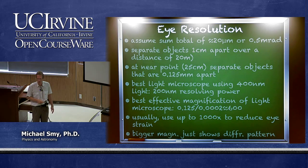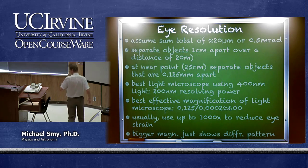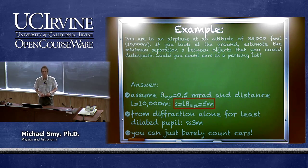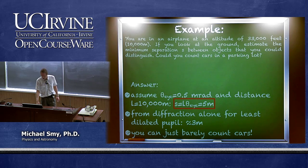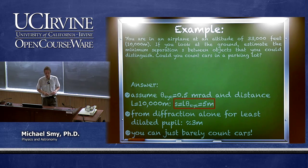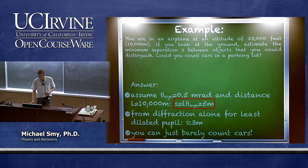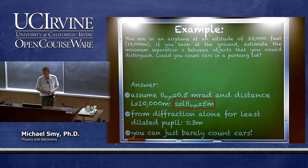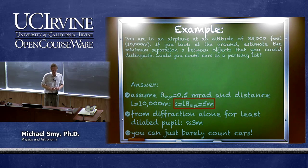Consider an airplane at an altitude of 33,000 feet — about 10,000 meters — looking at the ground. Estimate the minimum separation needed between objects to distinguish them. Using the standard half-milliradians angular resolution of the eye and a distance of 10,000 meters, the resolving power is 5 meters. We can just barely count cars if they are large enough.